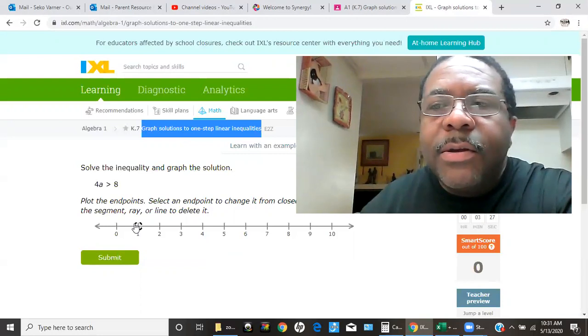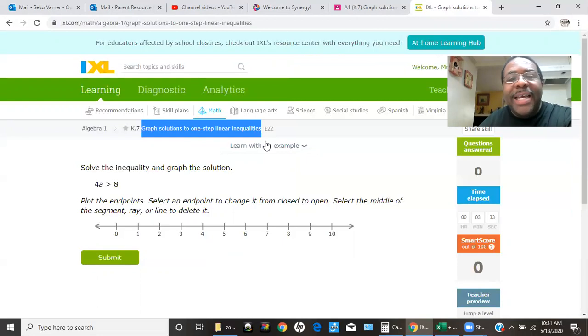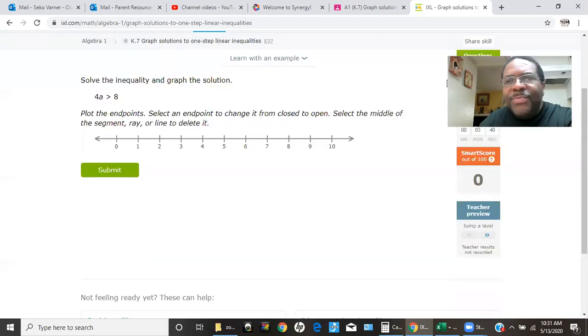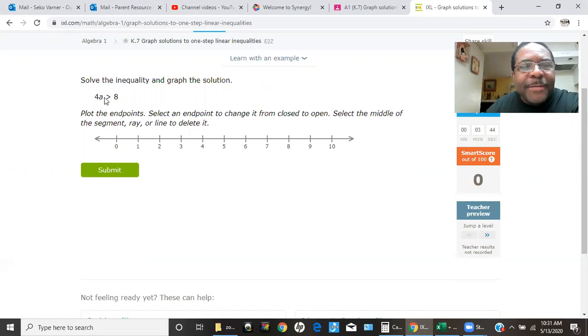We're going to graph solutions to one-step linear inequalities. Always start by learning by example, but this time I think I'll just start with this one. So that says 4a is greater than eight. Let's do this. Let's write it out so we can solve the problem. 4a is greater than eight.